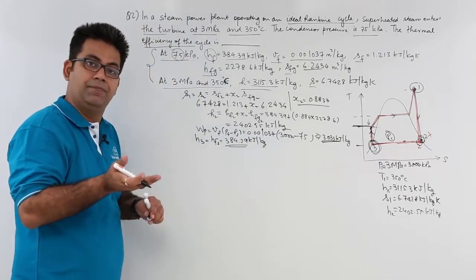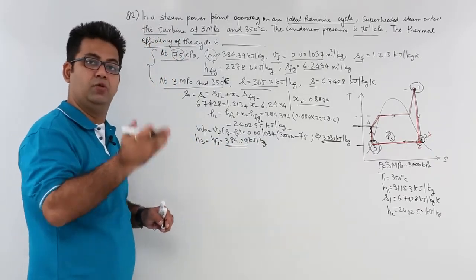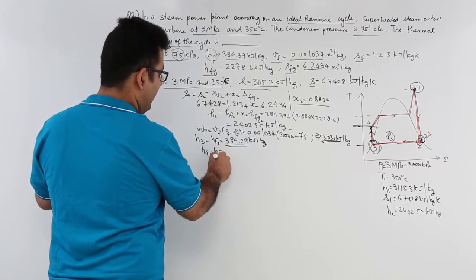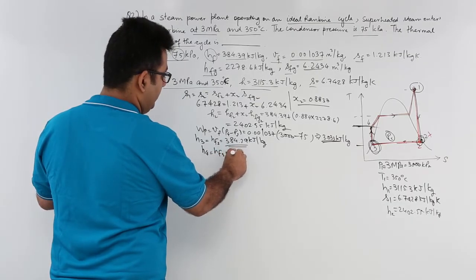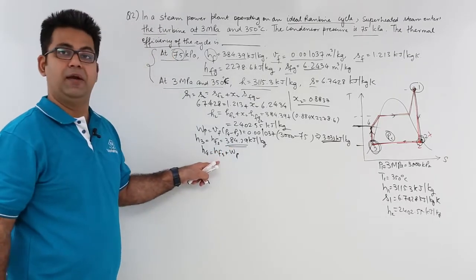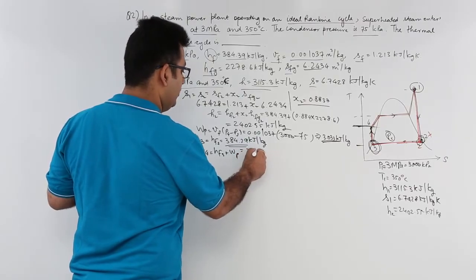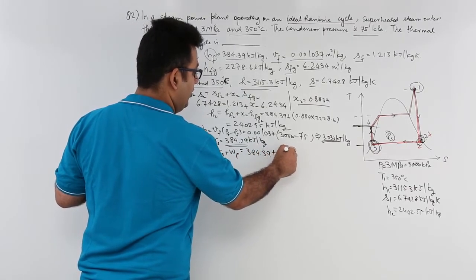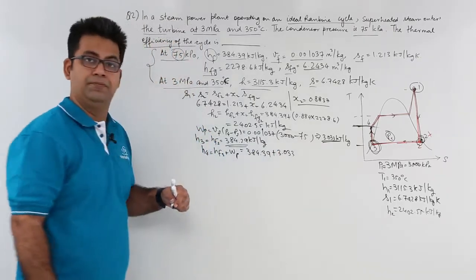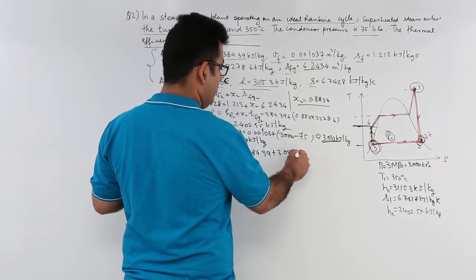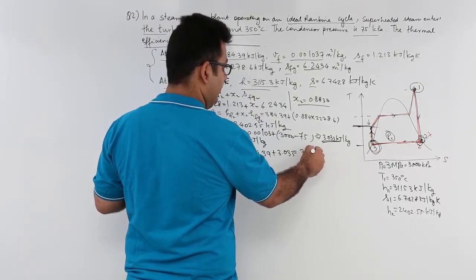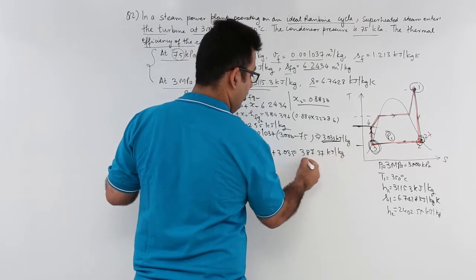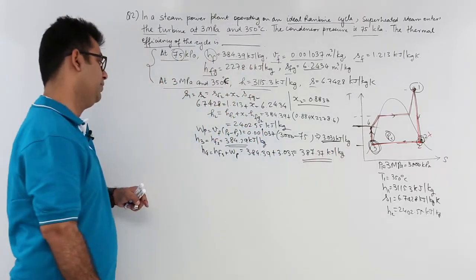Now, you are at H3. You put in some pump work and you reach H4. So, H4 can be found out by adding pump work to the liquid enthalpy at state 3. So, this is 384.39 plus 3.033, and this would be equal to 387.37 kilojoule per kg.